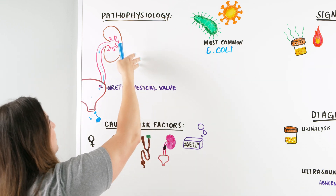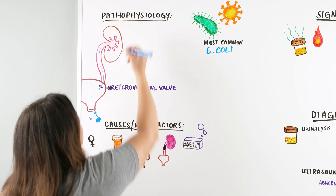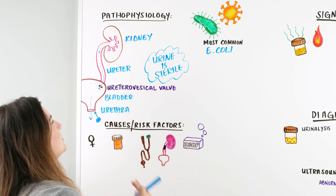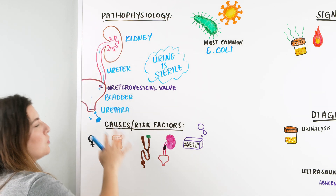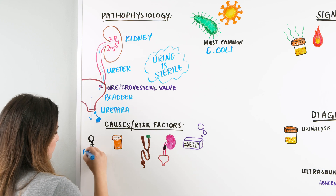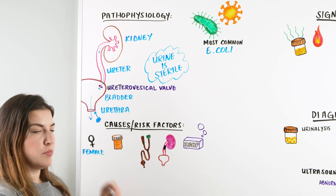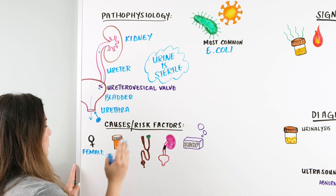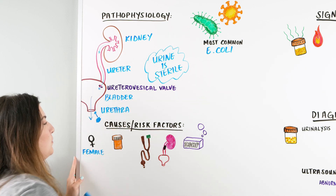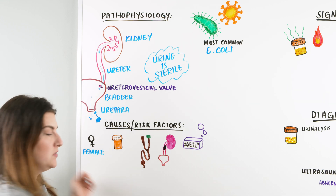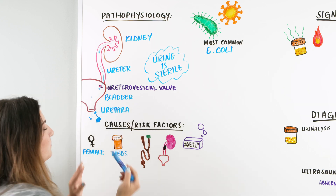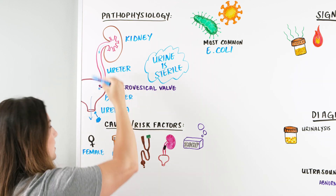Remember, urine is sterile, and we want it to be flowing down right out through the urinary tract. There are many risk factors that can make us more at risk for a UTI. The first is being female — the shorter urethra and the proximity of the rectum to the urethra opening allow E. coli to potentially accumulate and ascend into the bladder. The second risk factor is medications, particularly antibiotics, which can break down our good flora and allow bad bacteria to grow up into our urinary tract.